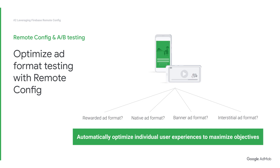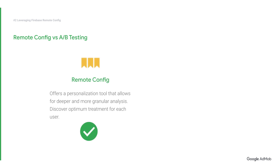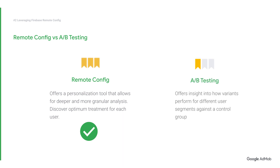Whether you're a newbie or experienced publisher in the ad business, adopting different ad formats can be tricky. Not all ad formats are suitable for every ad. Some formats might perform better than others due to certain ad properties. This is why it is so important to test and optimize your ads before rolling them out fully to your entire user base. Remote Config's personalization tool can help you automatically maximize the objectives you want through machine learning. While A/B testing shows you how variants perform for different user segments, personalization goes deeper to discover the optimum treatment for each user.